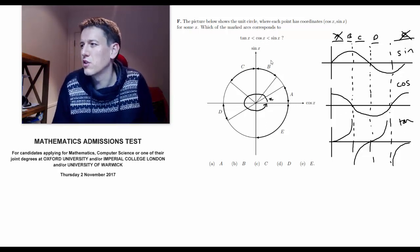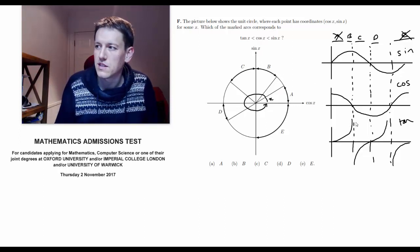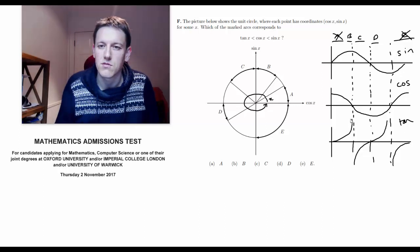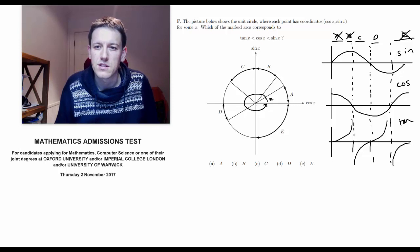Now, what about tan θ being smaller than cos θ? Well, tan θ here goes off to plus infinity in region B, so it's certainly not that one. So I'm just down to C and D now.